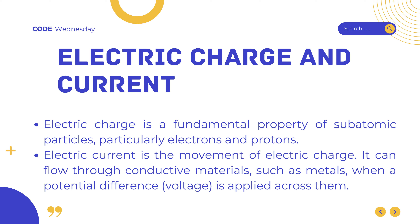Electric current — when these charged particles start moving, we have electric current. It's like a bunch of electrons going for a stroll. They move through materials that allow them to flow, like metals, when we give them a little push with something called voltage. Electric current is measured in units called amperes (A) — it's like counting how many electrons are taking that stroll.